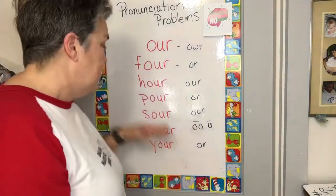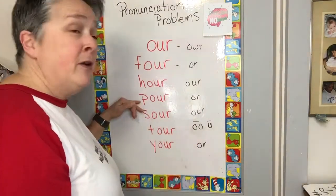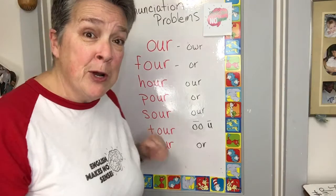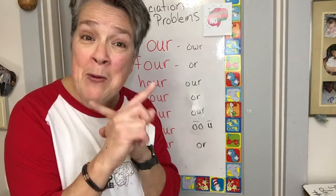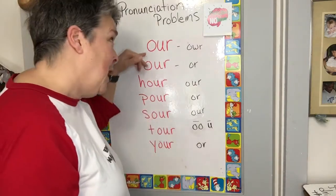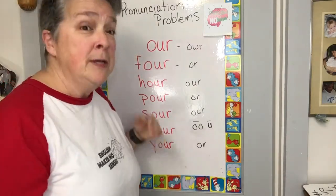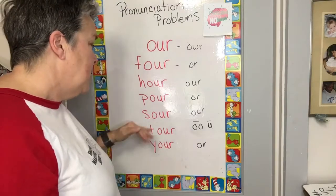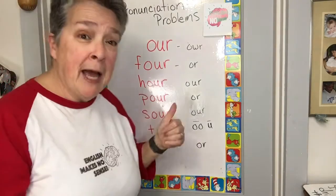It gets better. Take the P off of 'pour,' put an S on — no, no, no — we get 'sour,' now we're back to our sound. Huh? Yeah, 'our,' 'sour.' Got it.